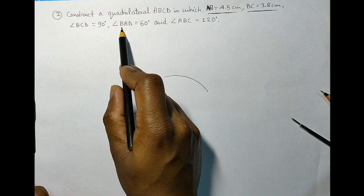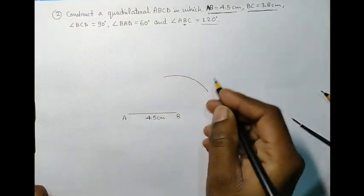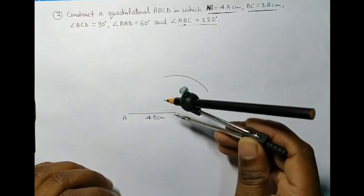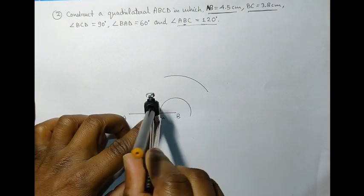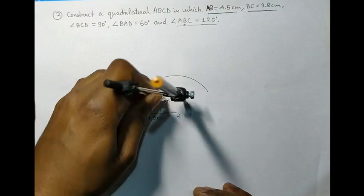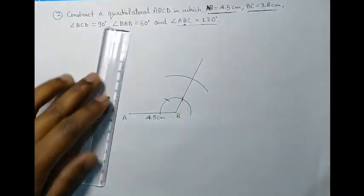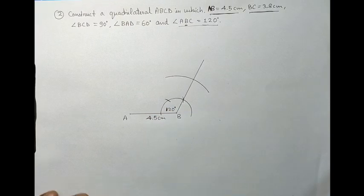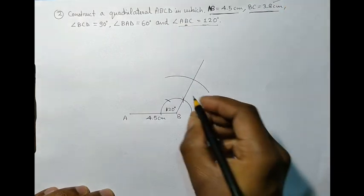Now, we know that angle B will be 120 degree, as it is given in the question, angle ABC. So, we know how to construct 120 degree, we will construct 120 degree using the point B. Now, we have the measurement, angle ABC, 120 degree, and B and C, which is 3.8 cm.